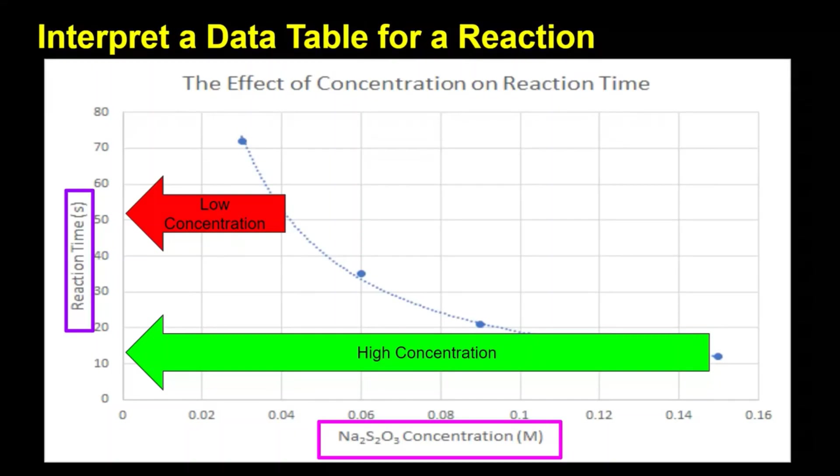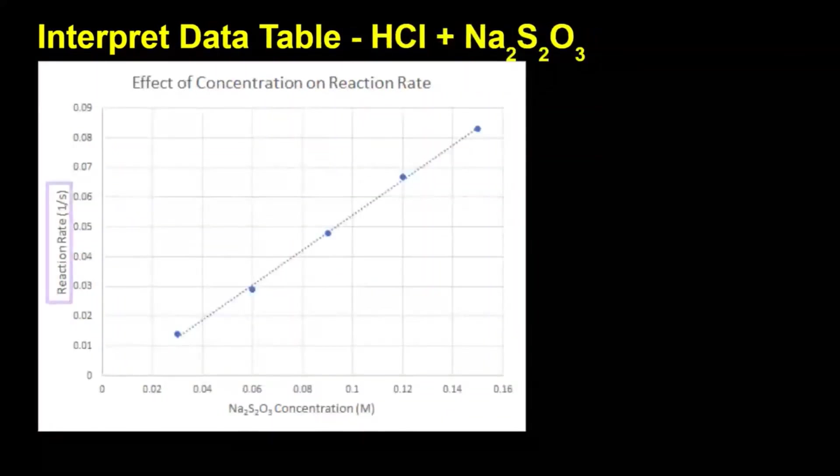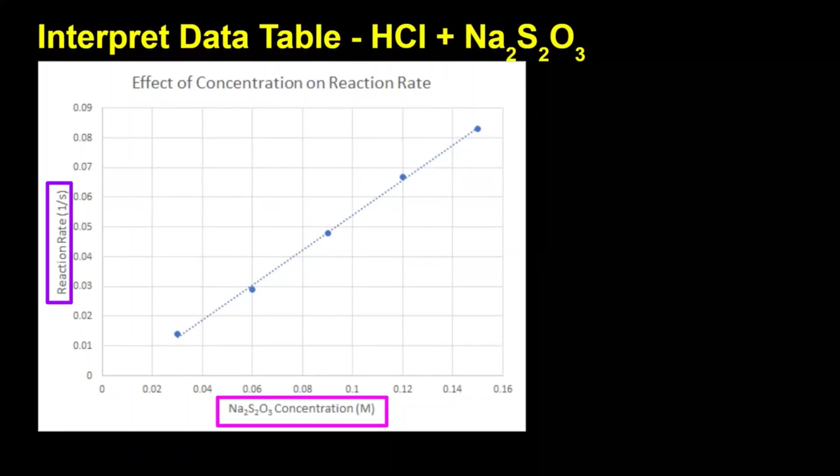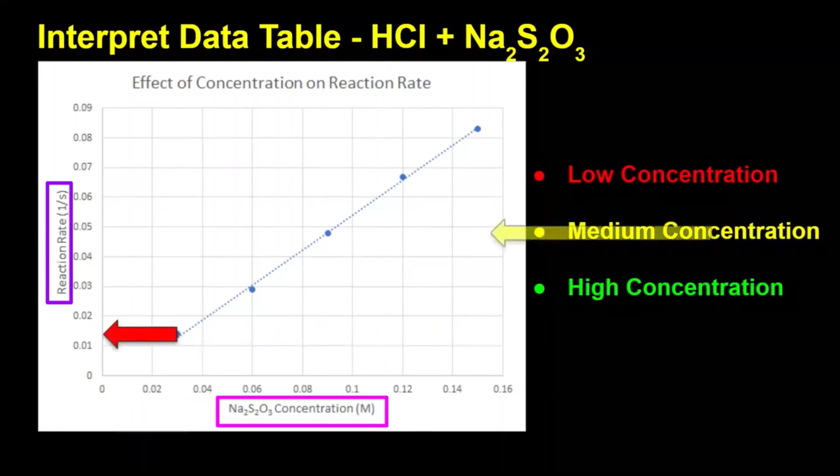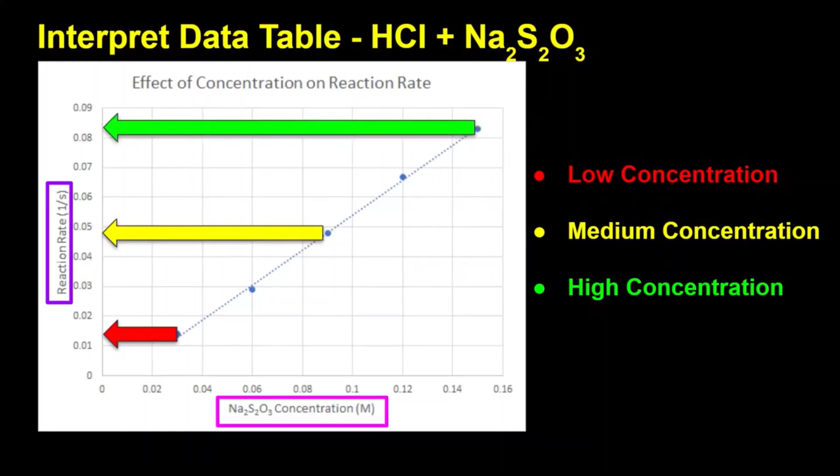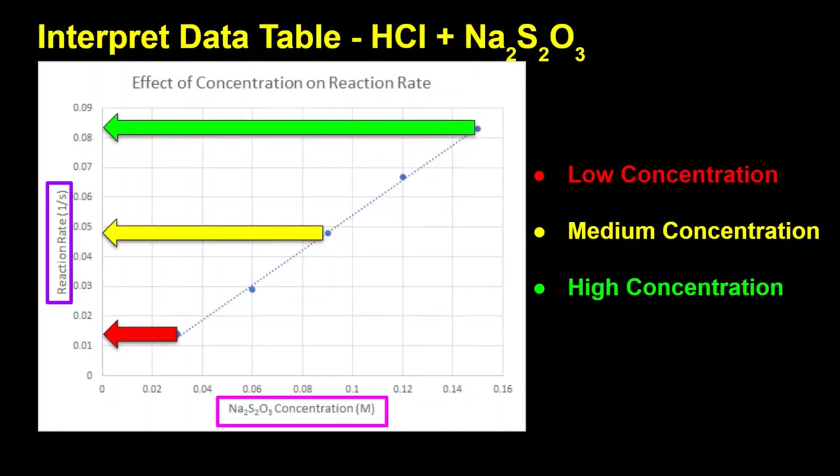When comparing the dependent variable of reaction rate, one over S, with the independent variable of concentration, we see a linear pattern, with the rate of reaction increasing with increasing concentration. Low concentrations produce lower reaction rates, and higher concentrations produce higher reaction rates.